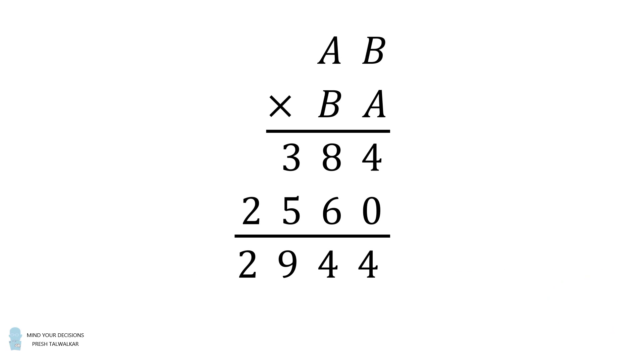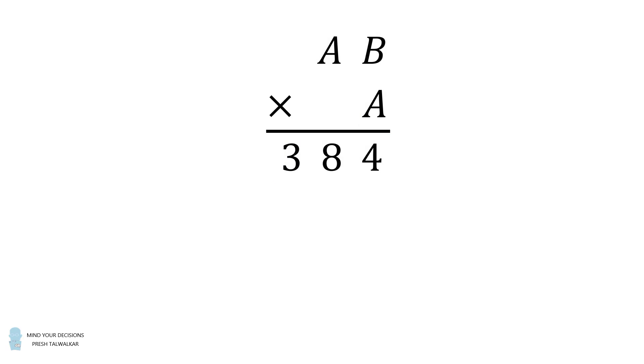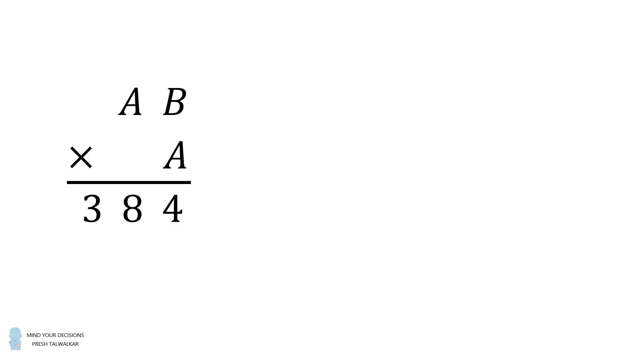Here is one way to solve the problem. Focus on the calculation of AB multiplied by A. This will correspond to the first row that's equal to 384. What can we deduce from this? We can see that 10A multiplied by A plus the carryover of B multiplied by A is equal to 380.